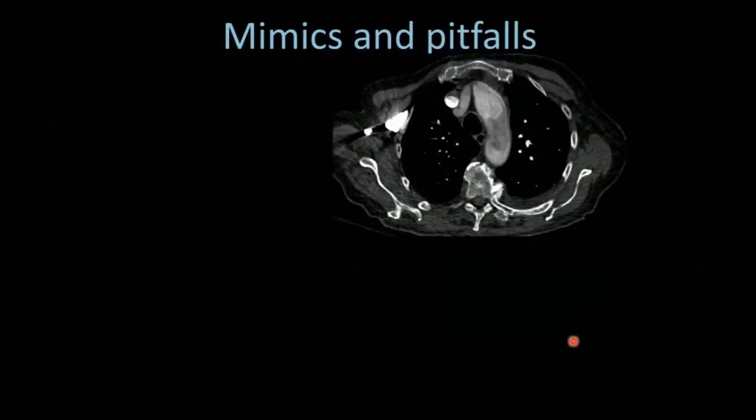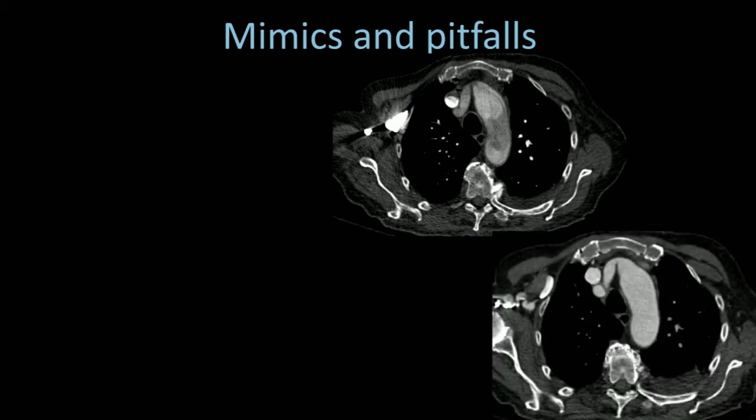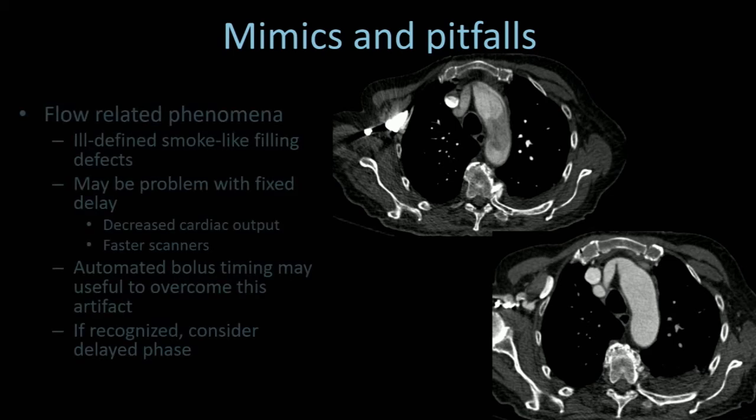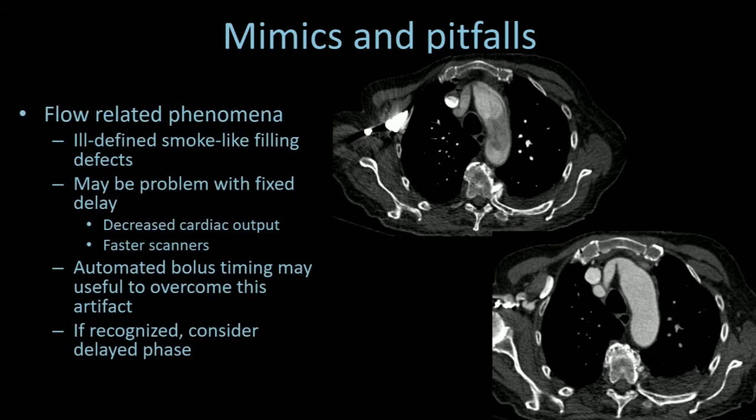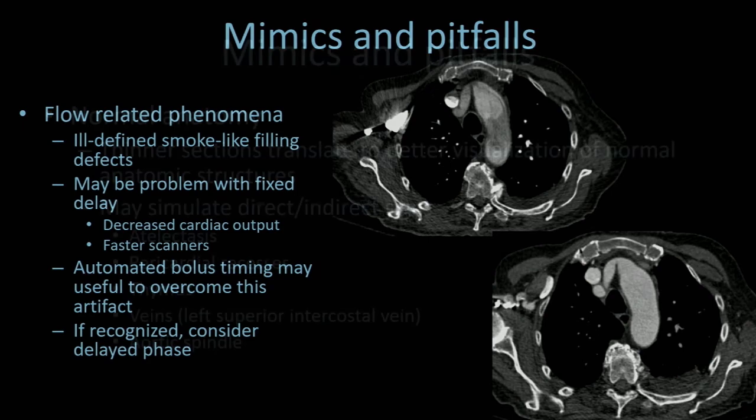Another important mimic: This patient was seen to have some filling defect within their arch. We noticed this and said maybe we're dealing with a flow artifact, so we scanned them in a more delayed phase. This patient had a low ejection fraction. This is simply a flow-related phenomenon. These ill-defined smoke-like filling defects can be a problem with fixed delay. Automated bolus timing may be useful, and if you see it, consider a delayed phase acquisition.